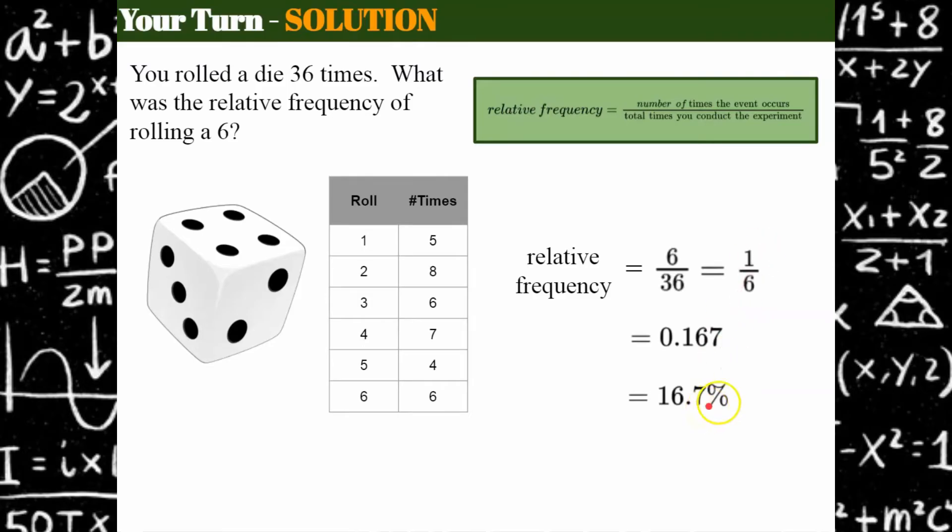You would hope that you would have this relative frequency for each of them, and you can see that I'm close. If I conducted these trials far more times, you would find that your experimental probability would get closer and closer to your theoretical probability.